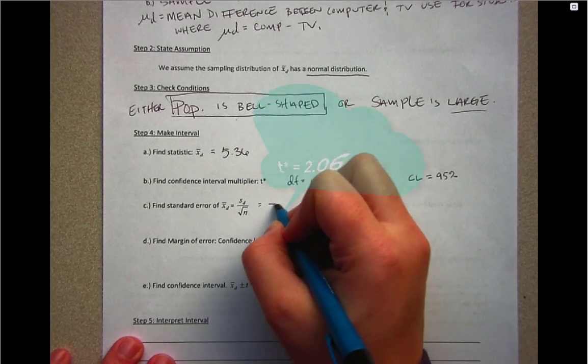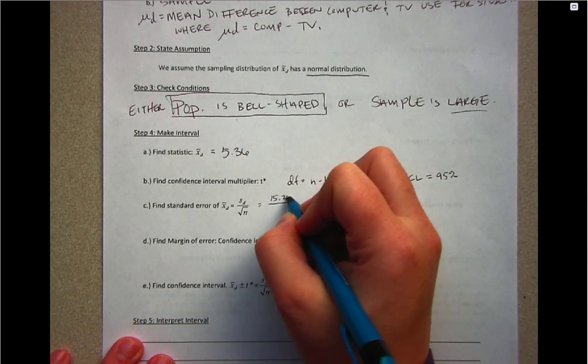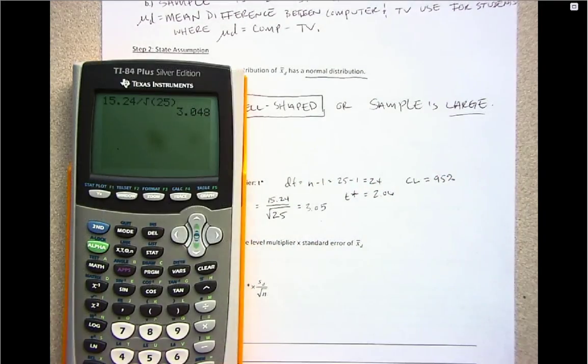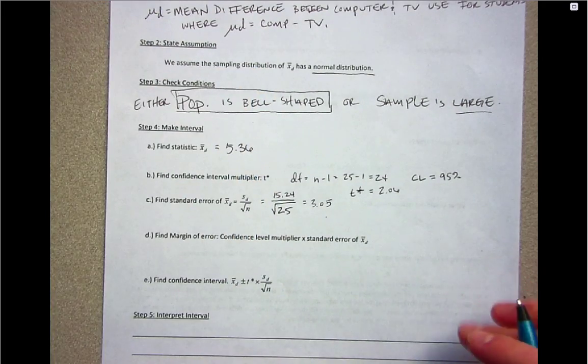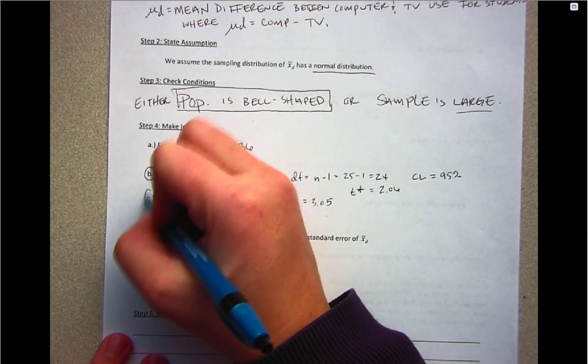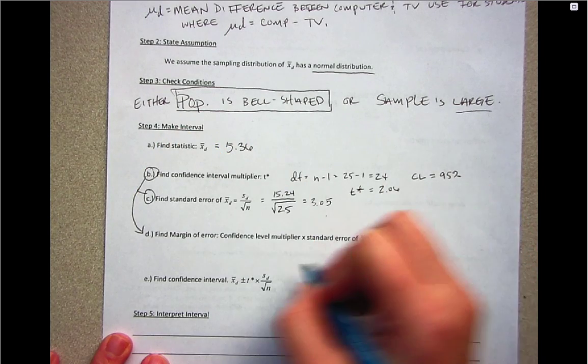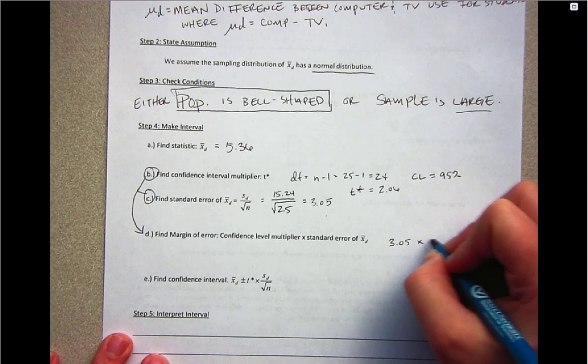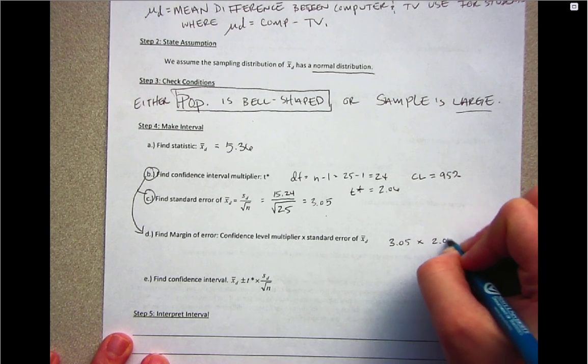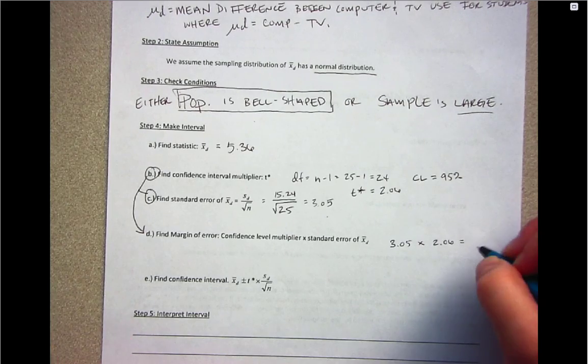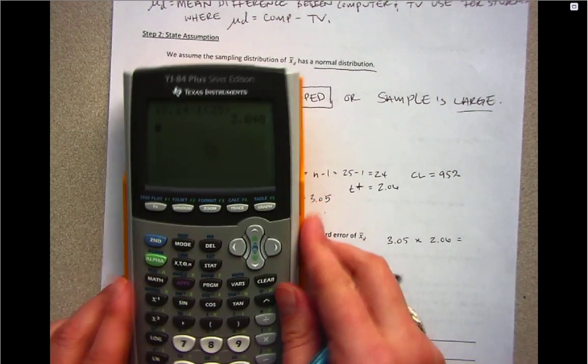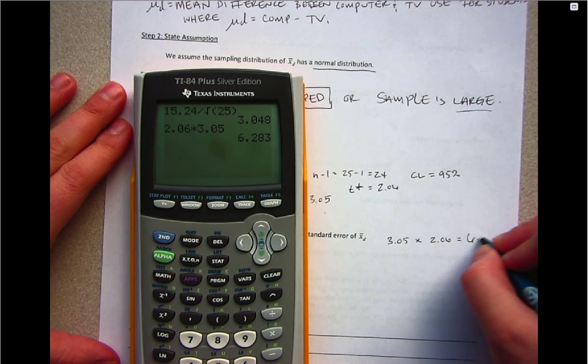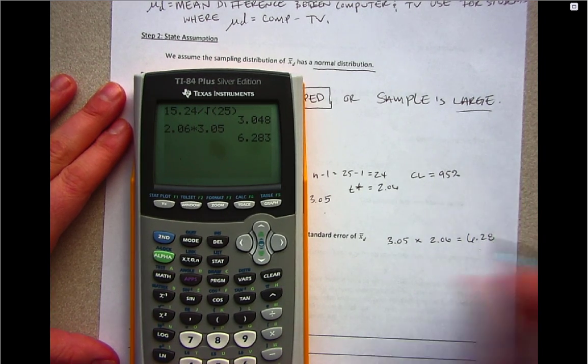To calculate standard error, we have s_d which was 15.24 over the square root of n, which is 3.05. Now I'm going to multiply the standard error by t* to get the margin of error. So 3.05 times 2.06 gives us a margin of error equal to 6.28.